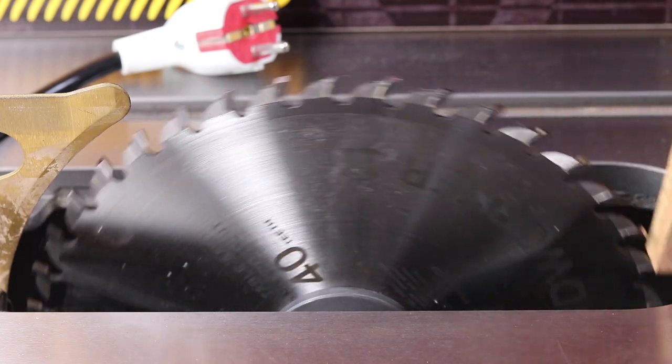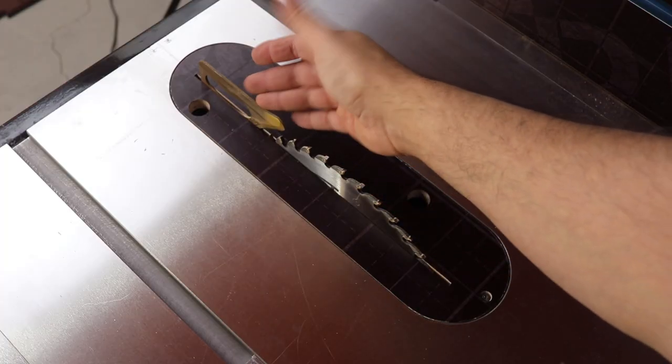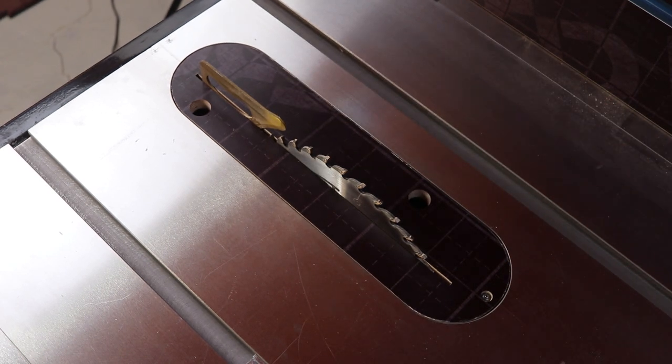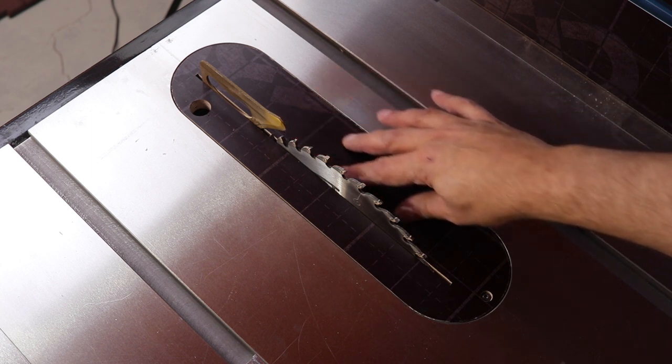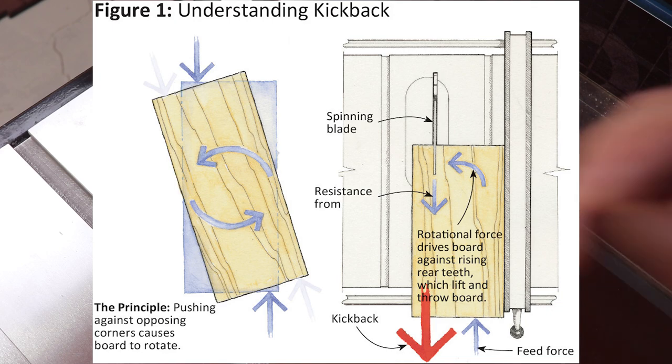The saw blade will always rotate towards the front of the table saw, and behind it you will find the riving knife that you should not remove unless you are using a dado blade. Many woodworkers don't use the riving knife, but I don't recommend doing so as it can reduce the kickback from happening in many situations.